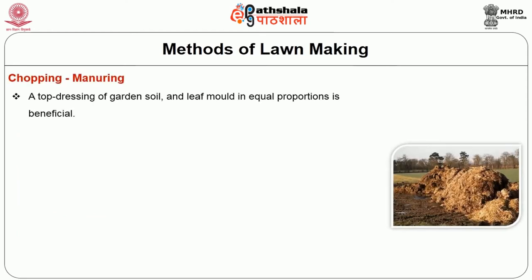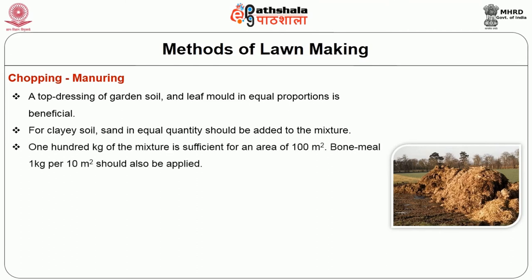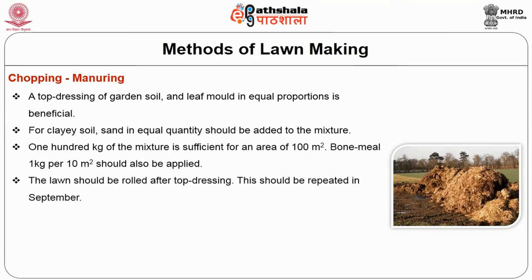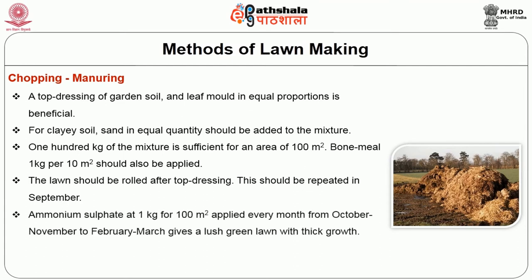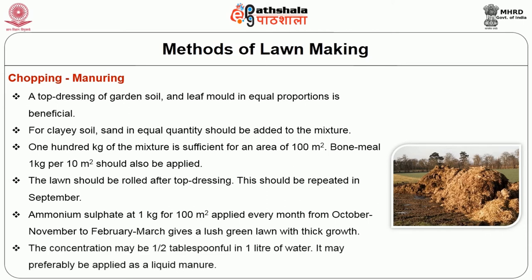Top dressing of garden soil and leaf mold in equal proportion is beneficial. For clayey soil, sand in equal quantity should be added to the mixture. 100 kg of mixture is sufficient for an area of 100 m². Bone meal at 1 kg per 10 m² should also be applied. The lawn should be rolled after top dressing. This should be repeated in September. Ammonium sulfate at 1 kg per 100 m² applied every month from October to November or February to March will give a lush green lawn with thick growth. A concentration may be half tablespoonful in 1 liter of water; it may preferably be applied as a liquid manure.